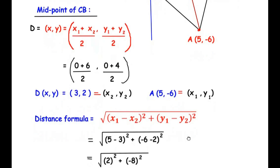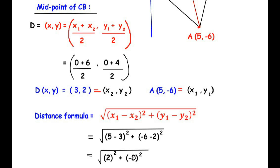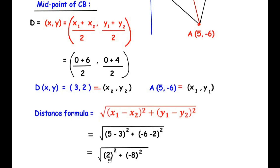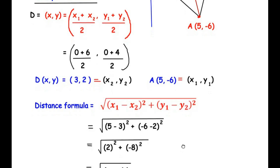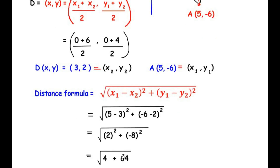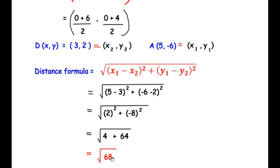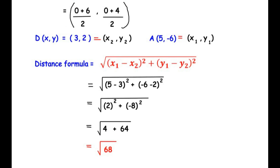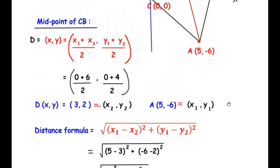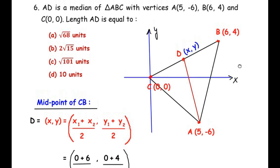We have √(2² + (-8)²) = √(4 + 64) = √68. So the distance between points A and D is √68, which matches option A. That completes the sixth question.